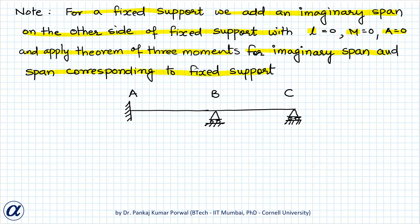So, in this case here we have a fixed support at A. So, I add an imaginary span on the other side of the fixed support with hinge support at the other end and let's call that A' then this length if I call it L0 will be zero. So, M A' will be zero and area under bending moment diagram for corresponding simply supported span will also be zero and we will write theorem of three moment for span A' B also. So, that will give us one additional equation.